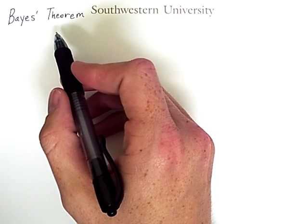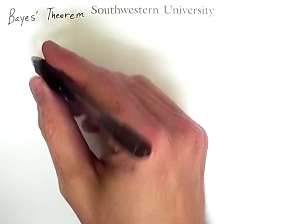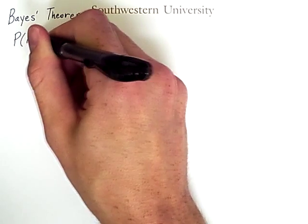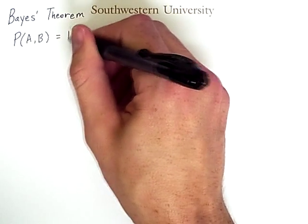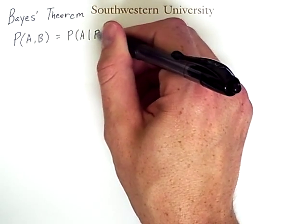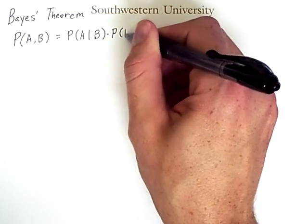It is a useful theorem that gives us some insight into how conditional probabilities work. Recall that the probability of A and B being true is equal to the probability of A given that B is true multiplied by the probability of B.